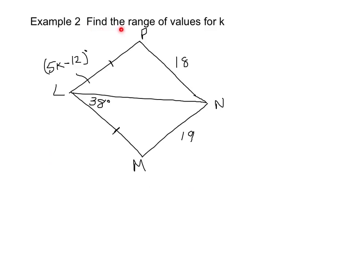Another type of problem is to find the range of values for K. We have two triangles — top and bottom — and K is within the angle. We can see that LP is congruent to LM, and LN is congruent to LN by the reflexive property. Because we have two pairs of congruent sides, we can use the hinge theorem or the converse. Since we know the side lengths but not the angles, we'll use the converse.